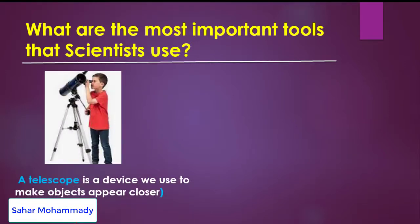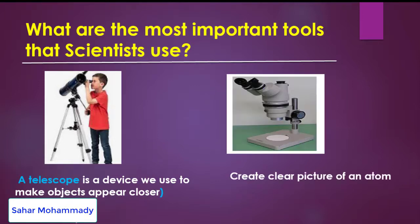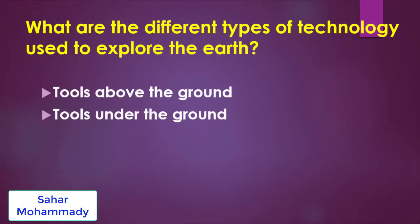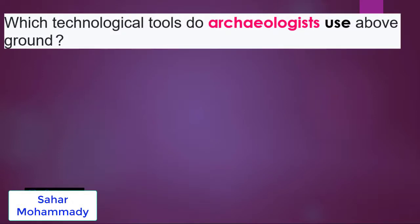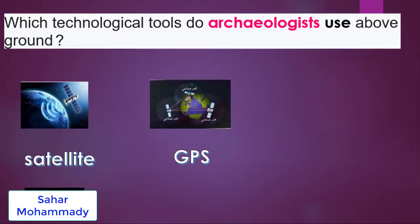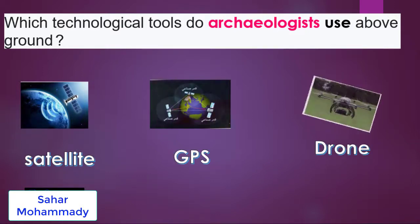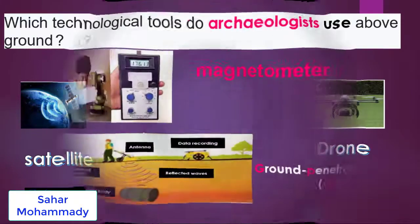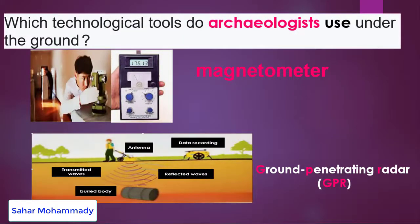Other tools scientists use include the telescope, a device we use to make objects appear closer when looking for something far away, and the microscope, used to create a clear picture of an atom because we cannot see with the naked eye. There are two categories: tools used above the ground — satellite, GPS, and drone — and tools used under the ground — magnetometer and GPR.